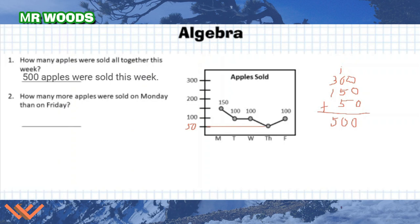Number 2. How many more apples were sold on Monday than on Friday? I can look here. Friday and Monday, there was 150 minus 100. I would say 50 more apples were sold on Monday than on Friday.